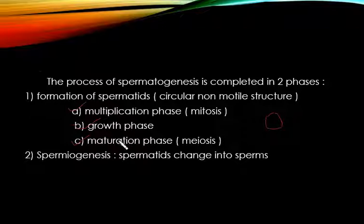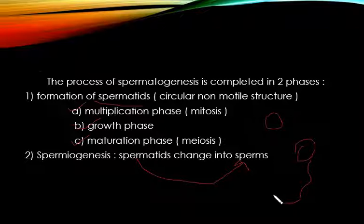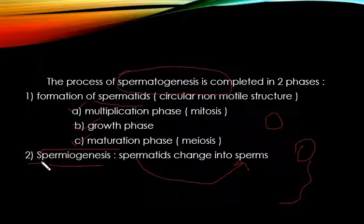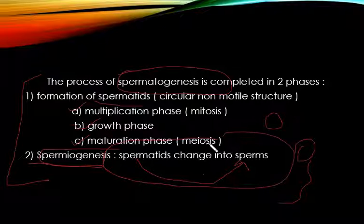Multiplication phase mein mitosis hoti hai, aur maturation phase mein meiosis hoti hai. Iske baad jab spermatids ban jaate hain, toh woh finally sperms mein convert hote hain. Sperm is a motile structure — that is, it can move. Is process ko — yani ki spermatids ko sperm mein change karne ke process ko — hum kehte hain spermiogenesis. Toh in dono terms mein confuse nahin hona: spermatogenesis is the entire overall process, jabki spermiogenesis is this particular stage of that process.